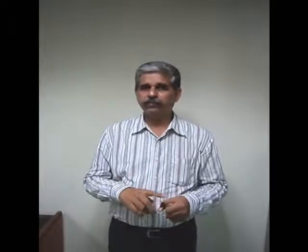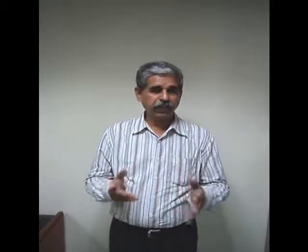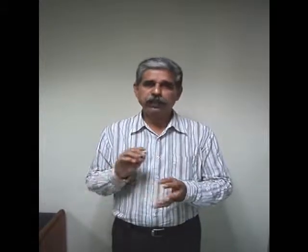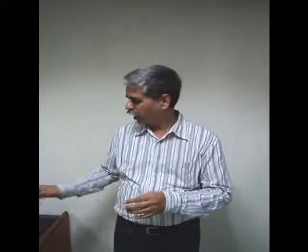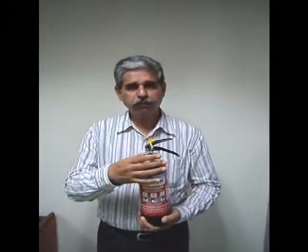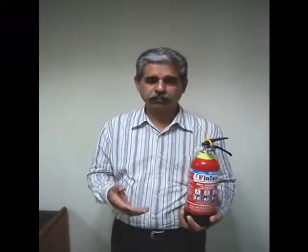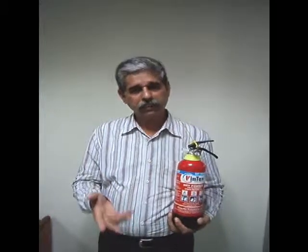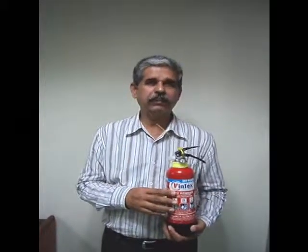So friends, today we covered: fire extinguisher types of fire — A for wood and paper, B for oil, C for electrical fire, D for metal fire. The formula PASS: Pull the pin, Aim, Squeeze, and Sweep. And the formula RACE: Rescue, Raise the alarm, Contain the fire, and Evacuate the area. If you have any queries or need any information, do send me an email and I am ready to help you out. Thank you very much.